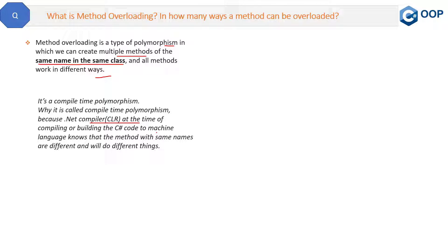Why is it called compile-time polymorphism? Because the .NET compiler, at the time of compiling or building the C# code to machine language, knows that methods with the same name are different and will do different things. So the .NET compiler will know that these two methods of the same name are different — that is why it is also called compile-time polymorphism.